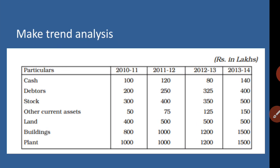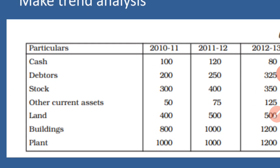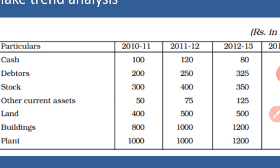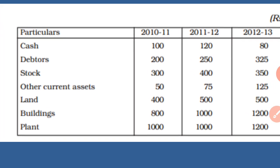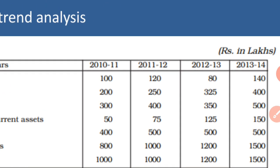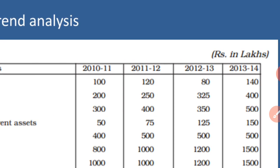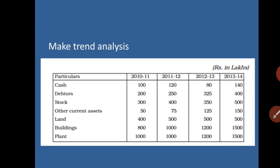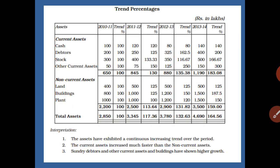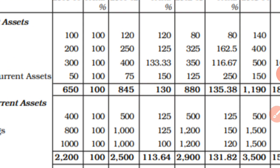Another example is given with balance sheet items: cash, debtors, stock, other current assets, land, building, and plant. Data is given for four years: 2010-11, 11-12. We need to make a trend analysis statement from this data using the same method.